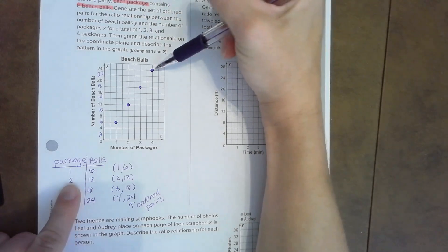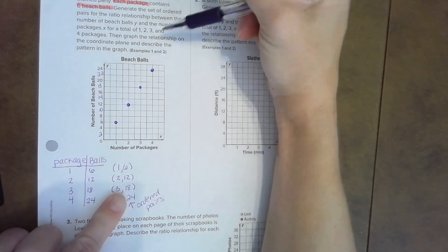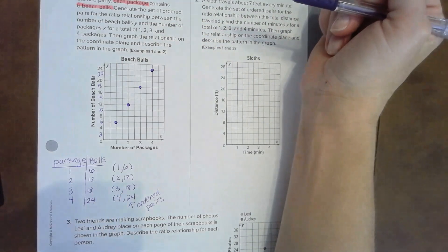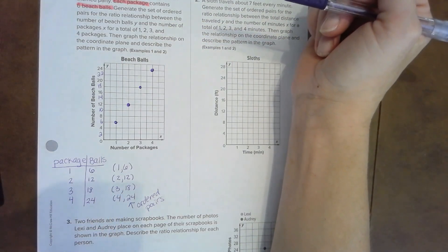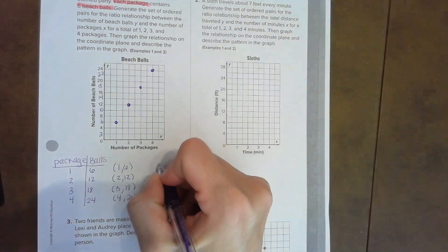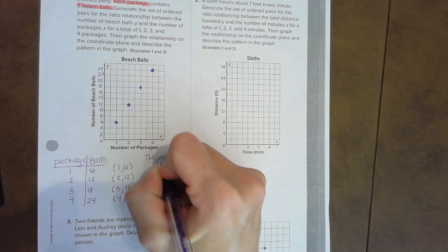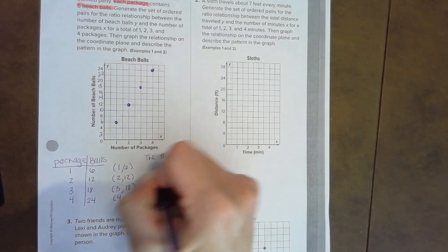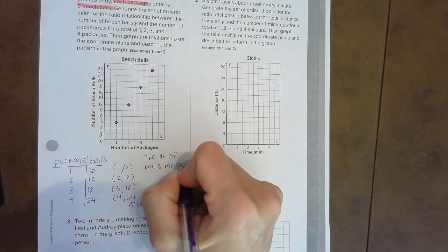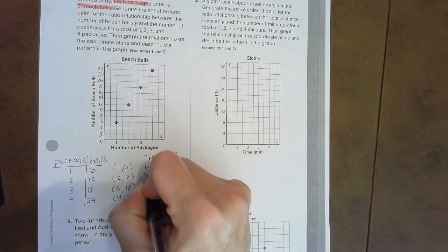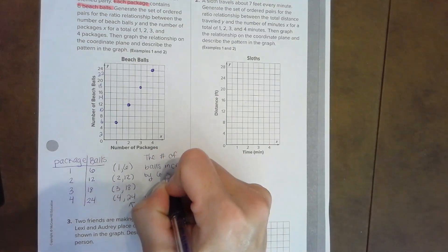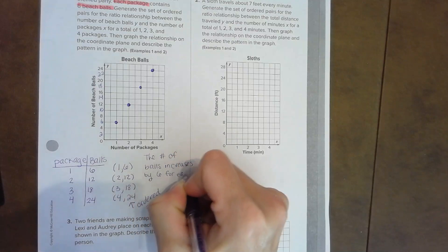Let's go back and double check. Generate ratio relationship between these—we did that. Graph them—okay, we've done that. Now we need to describe the pattern in the graph. The number of balls increases by six for each package.